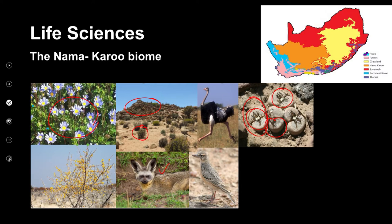The rock plants in this biome usually go unnoticed in the rocky terrain, but they blossom and produce beautiful flowers that emerge from what seems to be rocks.